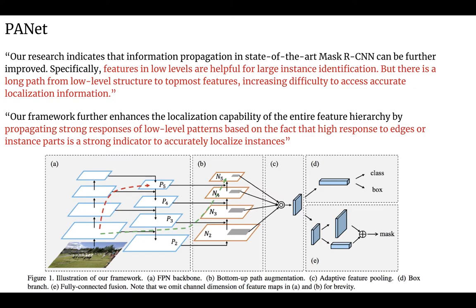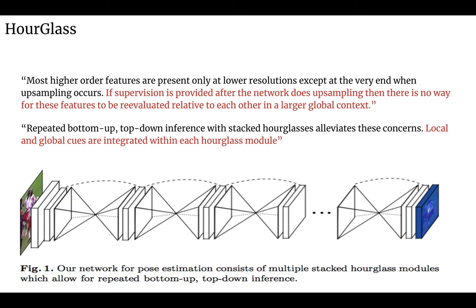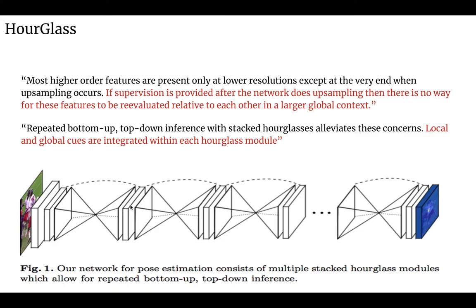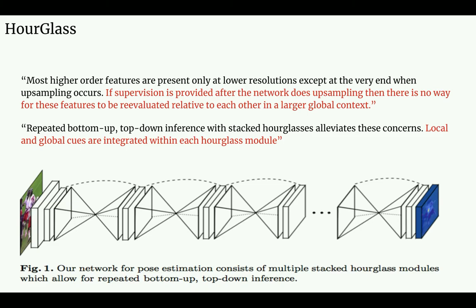Another paper that tried to address the same problem is the NAS-FPN paper. It uses a repeated stack of encoder-decoders, so global features influence local features, which then influence global features again, and so on. In this structure, local and global features continually talk to each other, and each can reconsider itself in the context of the other. The whole aim is that local and global cues should be tightly integrated to form a holistic representation of the image, leading to very accurate low-level features for dense prediction tasks.